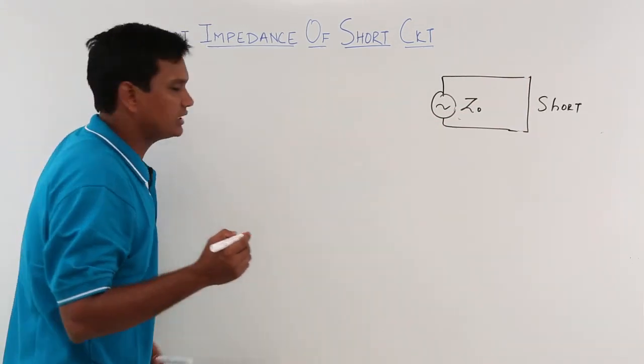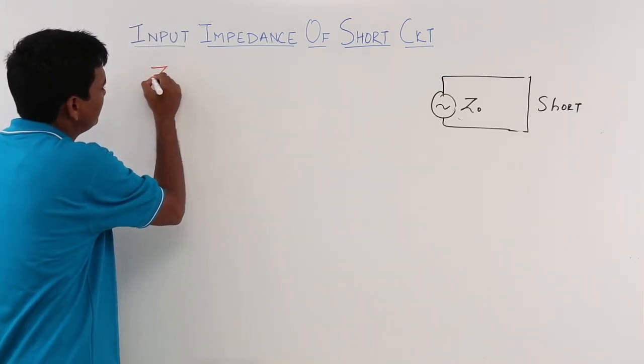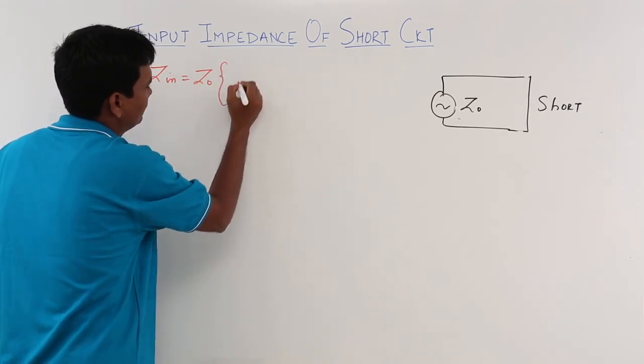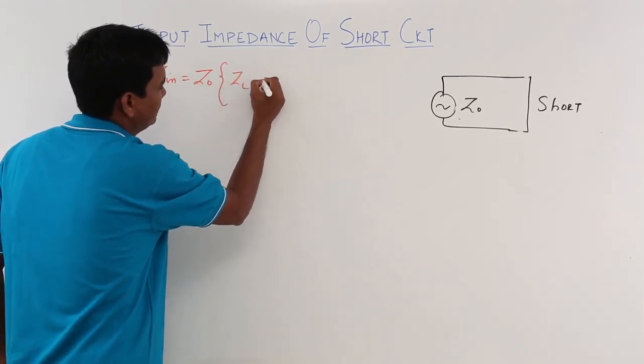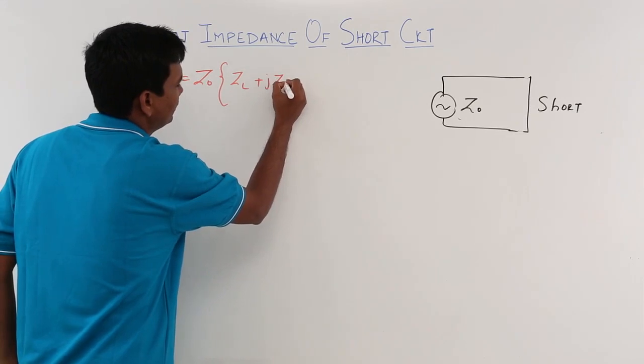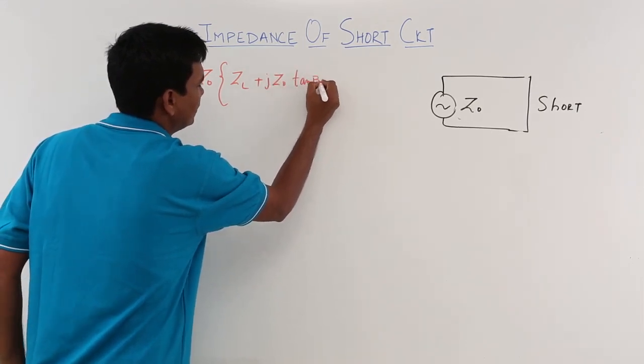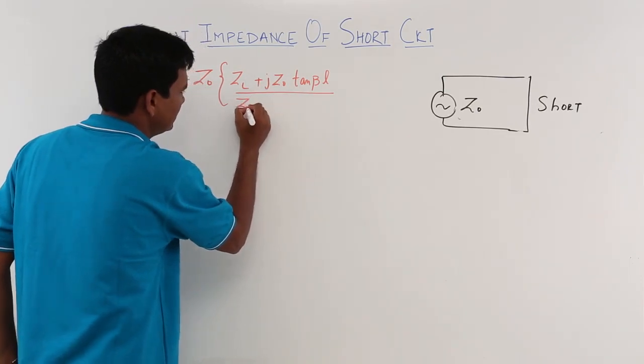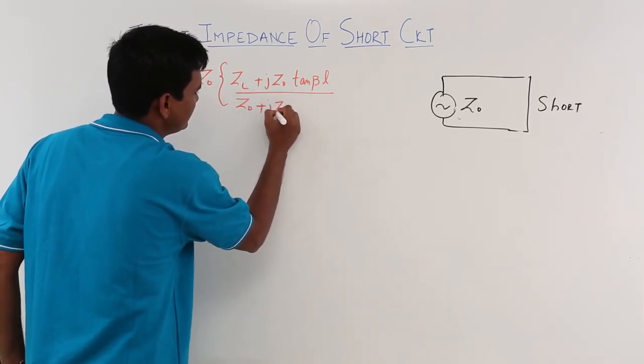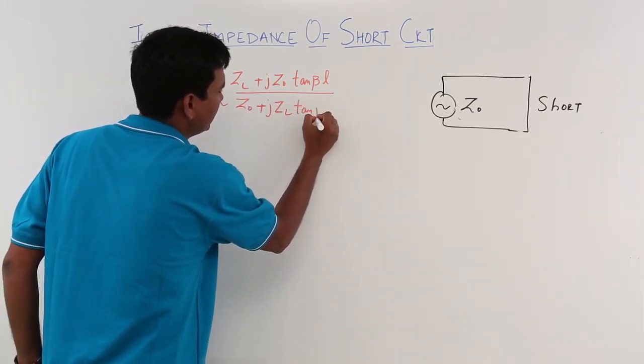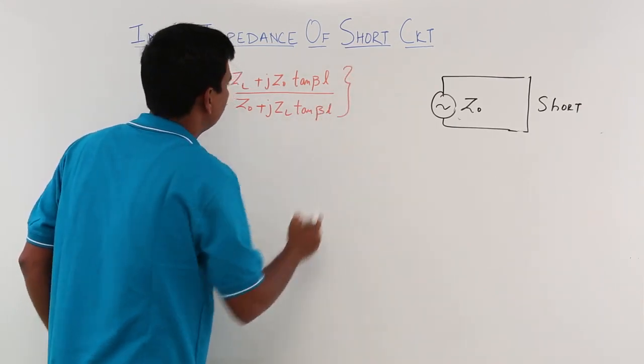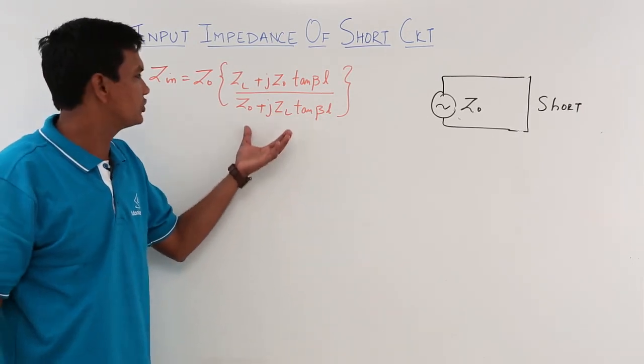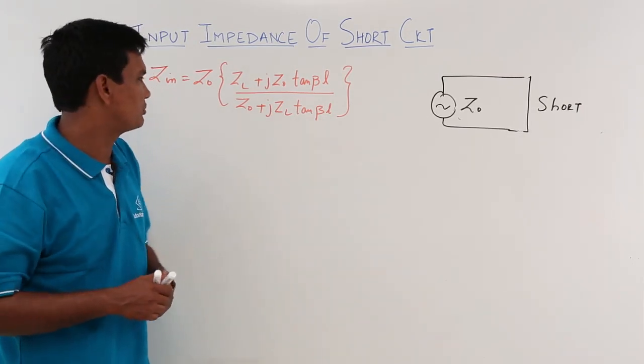What I know from the basic input impedance equation: Z_in equals Z₀ times (ZL plus j Z₀ tan βL) divided by (Z₀ plus j ZL tan βL). This is the input impedance equation in case of lossless medium.